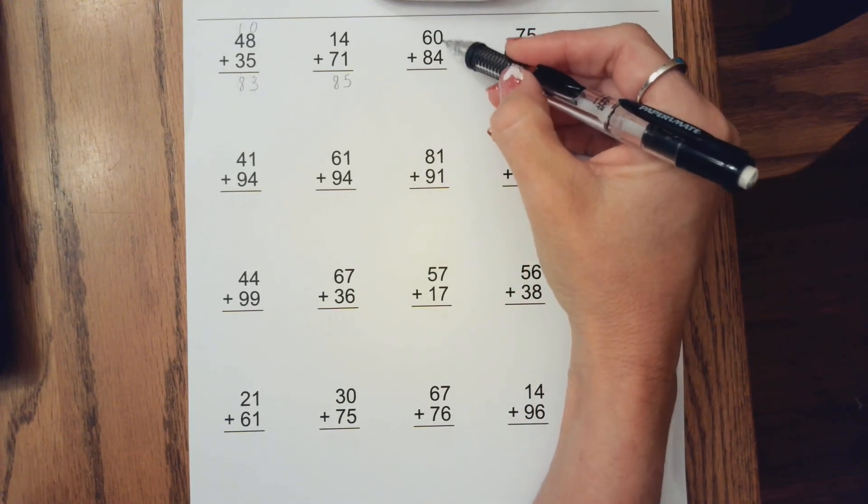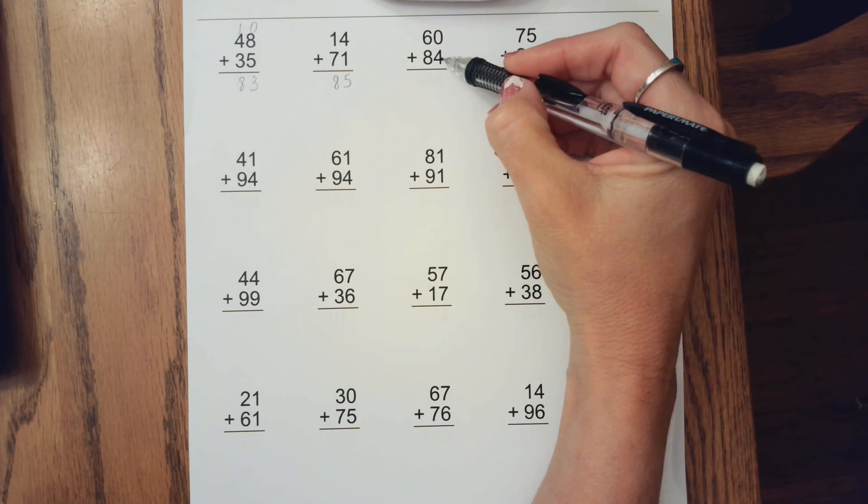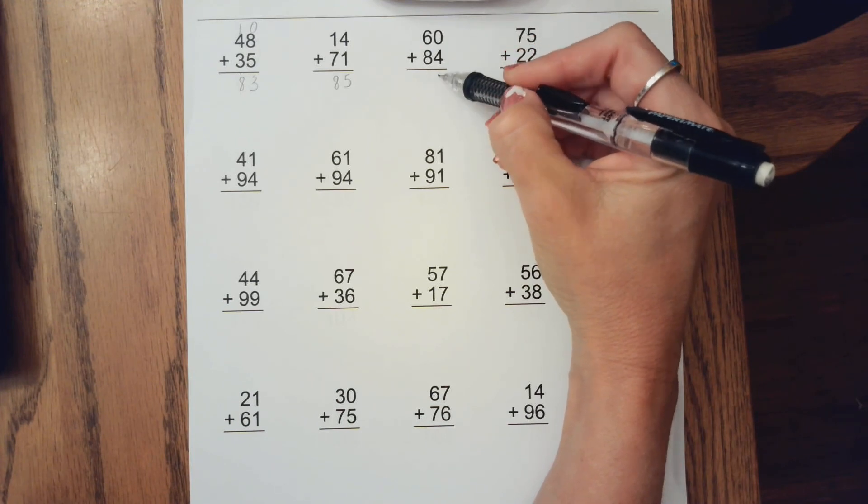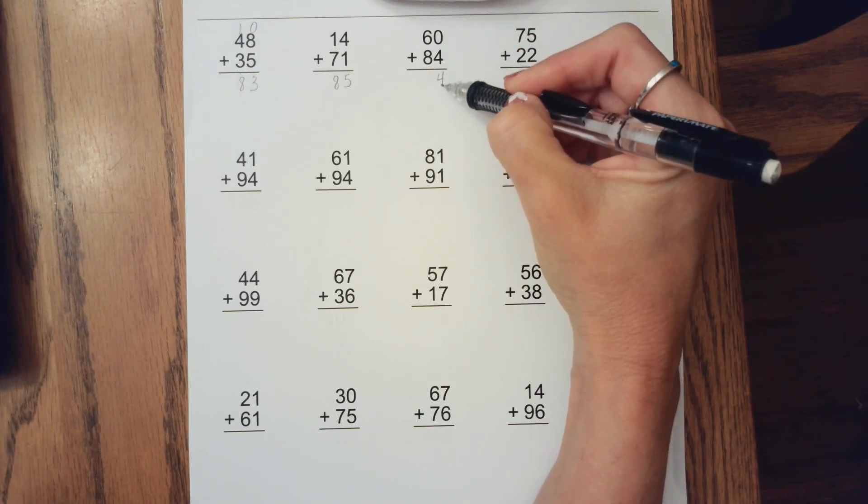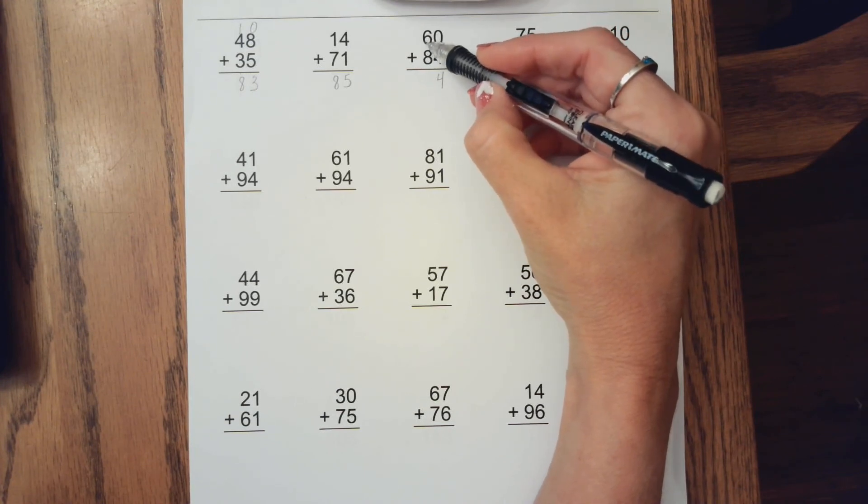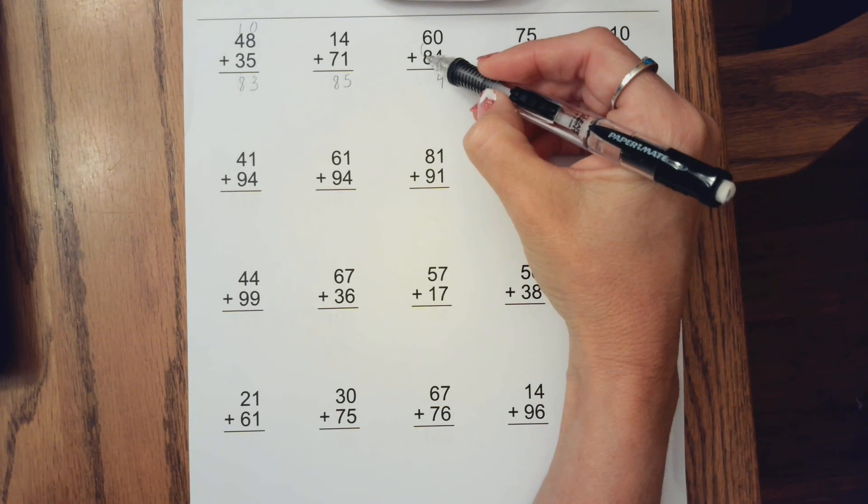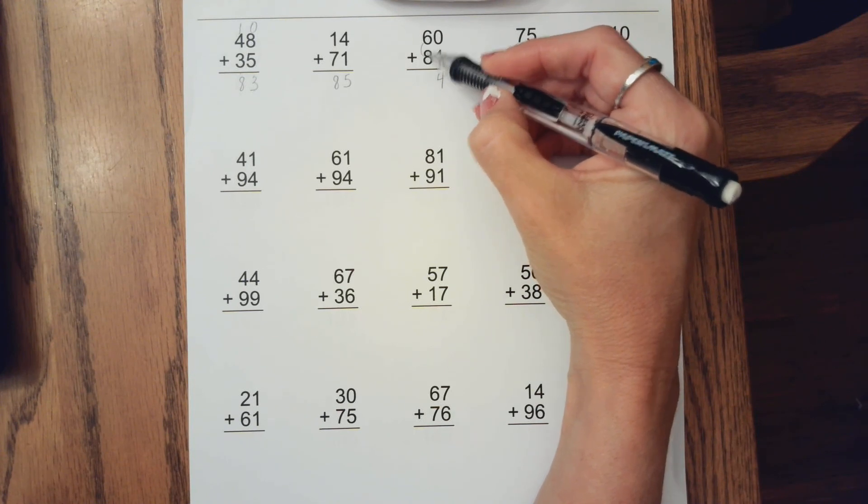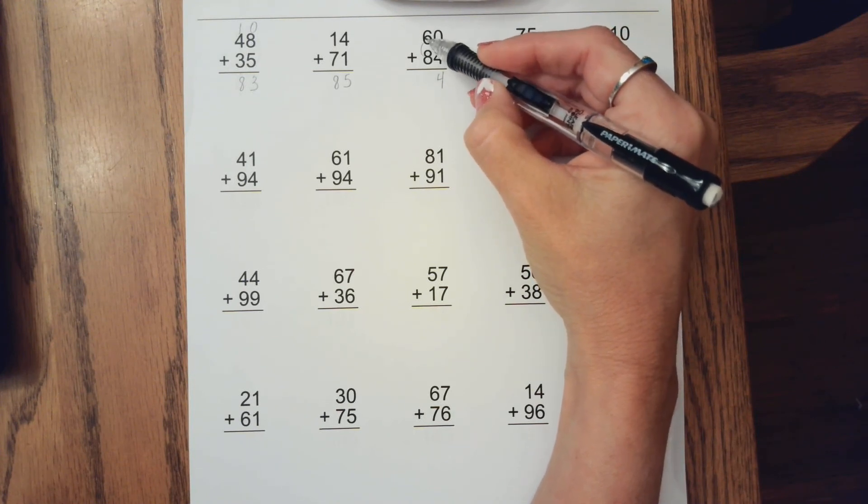Next one we don't have more than 10 again, so we have 0 plus 4. Bring that straight down and then we have 6 plus 8. So we know we can give 2 to the 8 and that's 10 and we have 4 left then.